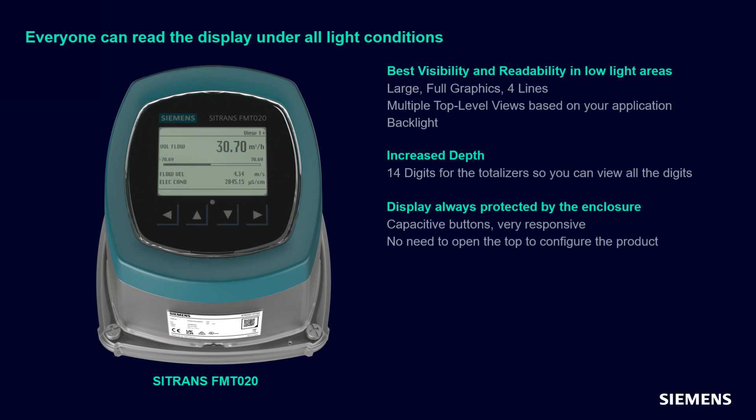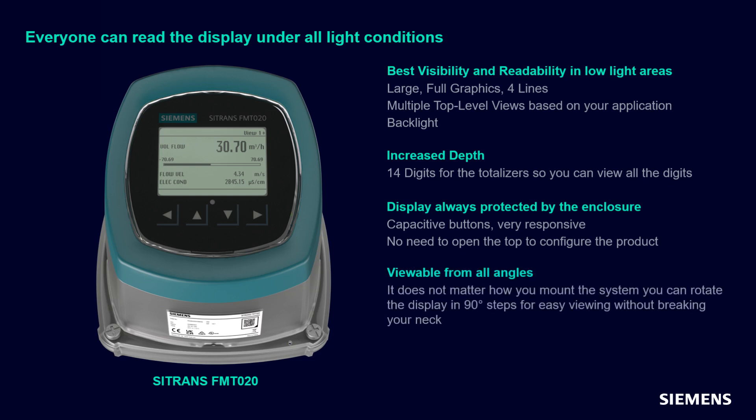You can operate the product without having to open the enclosure, and you no longer have to worry about humidity, dust, or rain getting into your electronics. We know that all applications are different — some mounted horizontally, some others vertically. To make it easy to read from all angles, you can mount the local user interface in four orientations. No more breaking your neck to read your numbers.